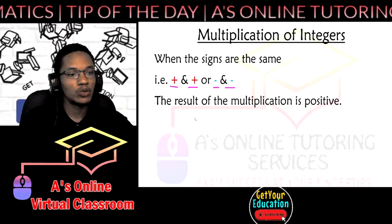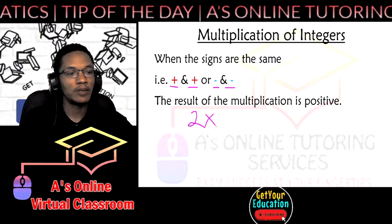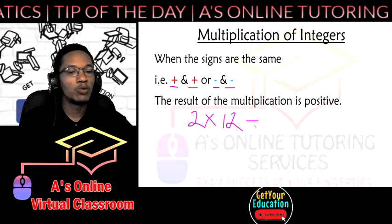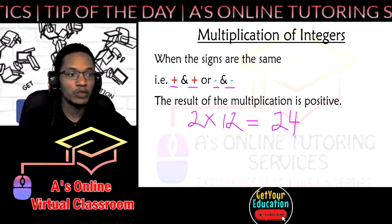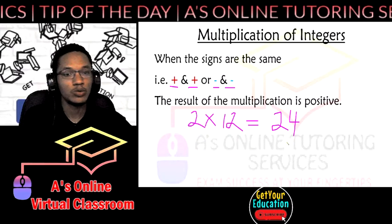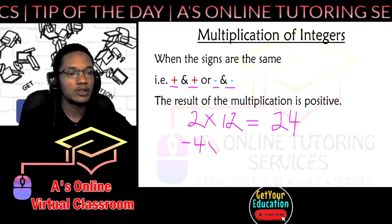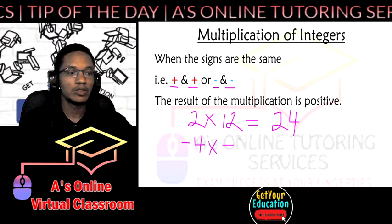So the example we can do is 2 multiply by 12, both positive numbers giving us positive 24, which is what we are accustomed to. But if we have negative 4 times negative 8...